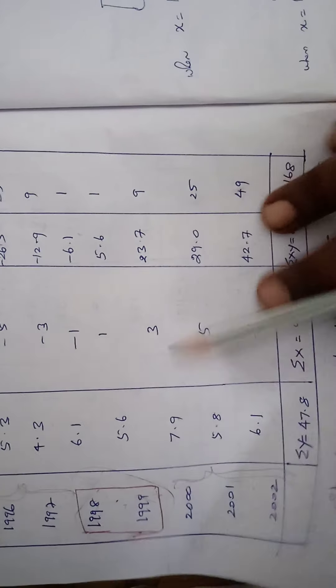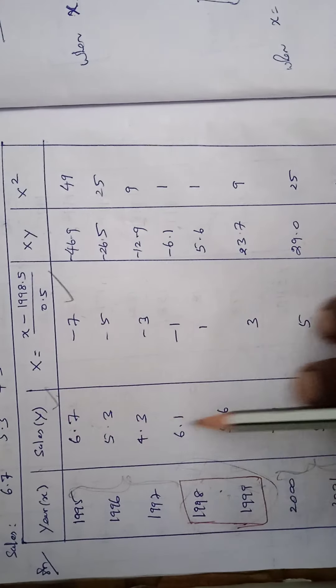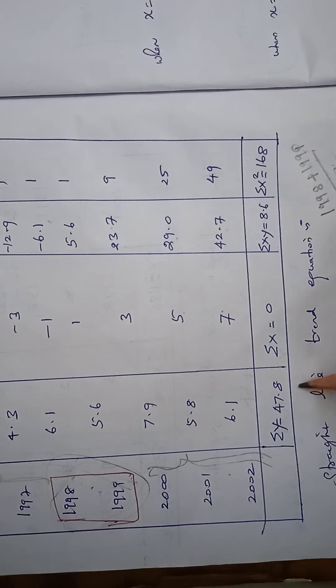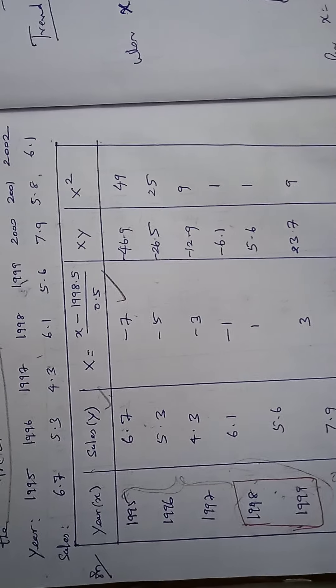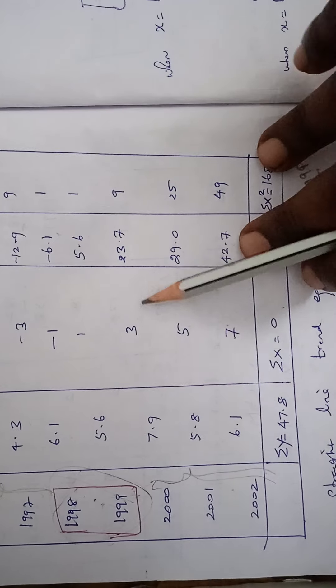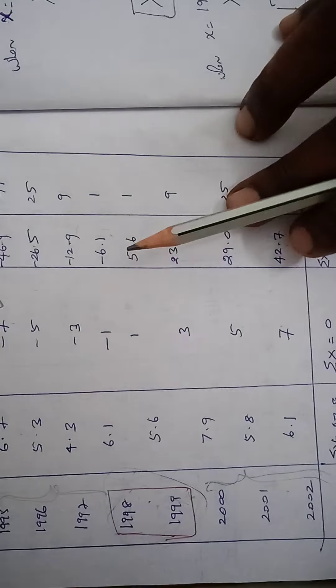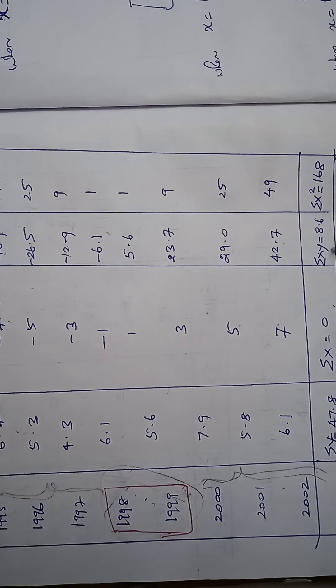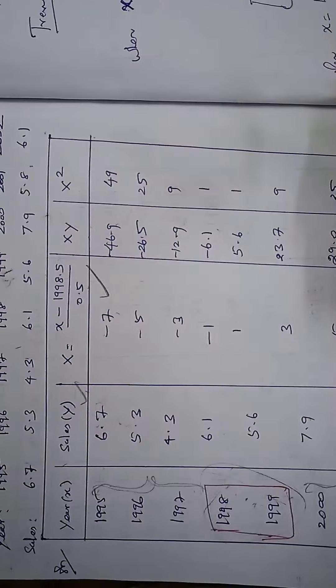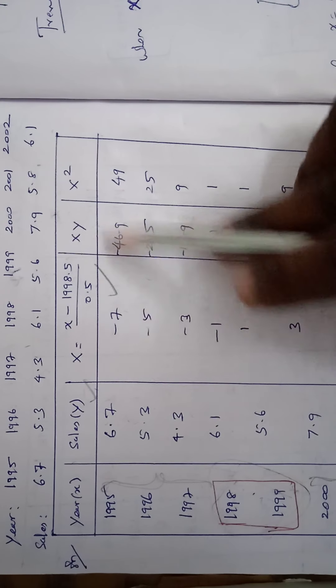So we have to first summing all the values of Sigma Y values 47.8. And Sigma X values are taken in 0. Adding all the values 0. And Sigma XY entries are 8.6 and X square value is X square.